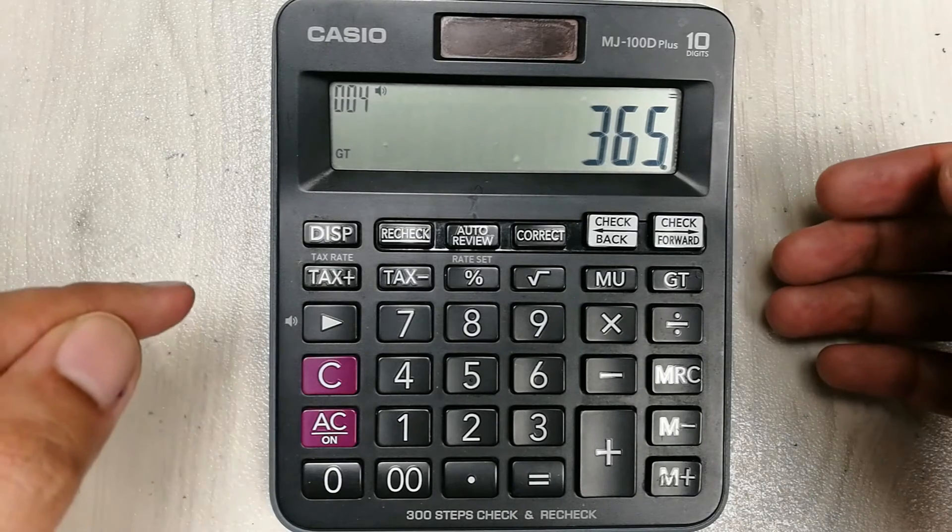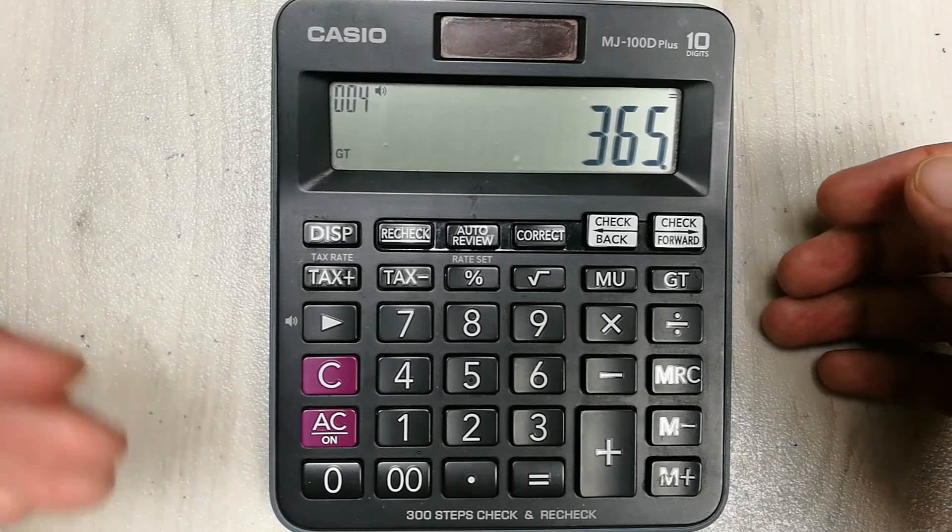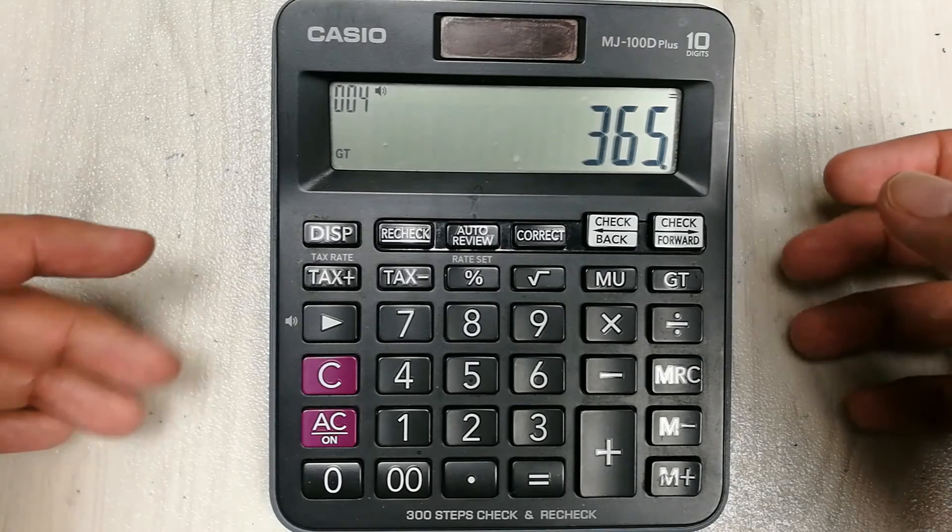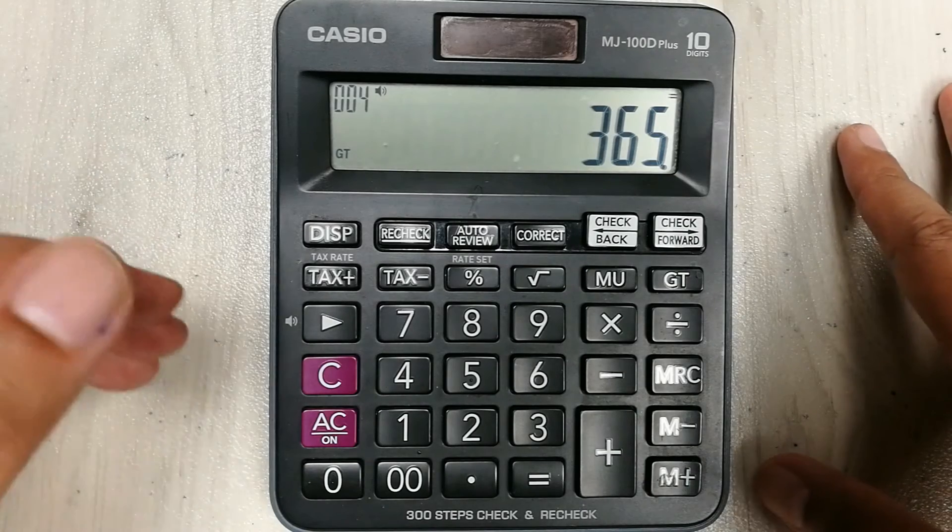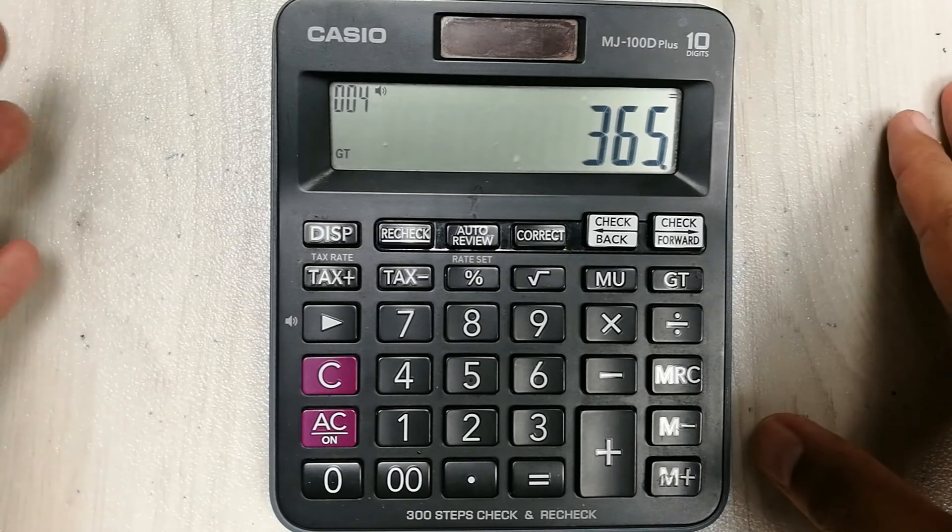So here is your final answer. You got 365 marks out of 500. So this is how you can convert your percentage into marks on your calculator.